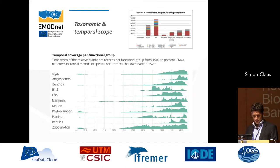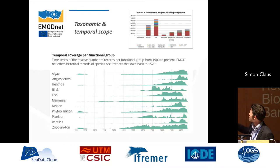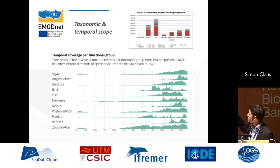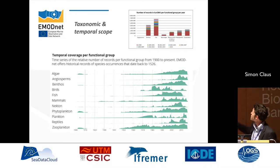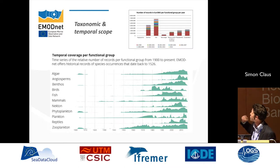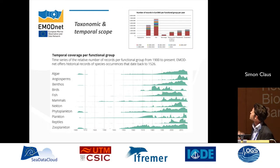Here you can see a graph showing the different functional groups for which we have data — algae, higher plants, benthos, birds, fish, mammals, nekton, phytoplankton, plankton, reptiles, and zooplankton. The second and third bars show benthos and fish dominate, so we mainly have benthic and fish observations, but we also have quite some planktonic datasets. Most of the data comes from the Greater North Sea and the Northeast Atlantic, with some from the Bay of Biscay and less from the Mediterranean Sea.